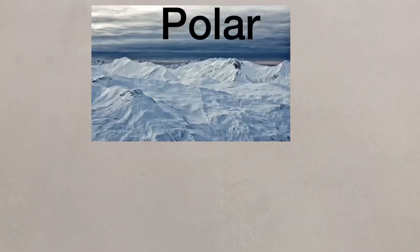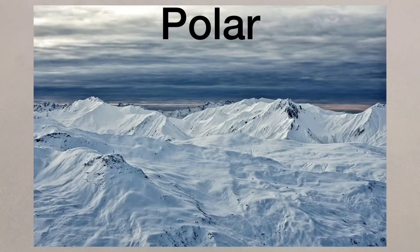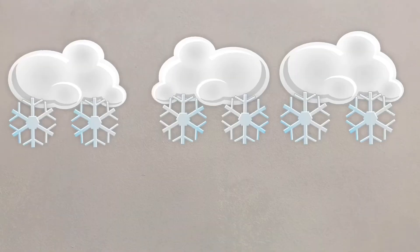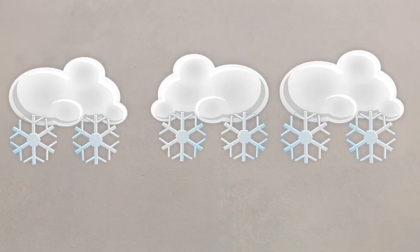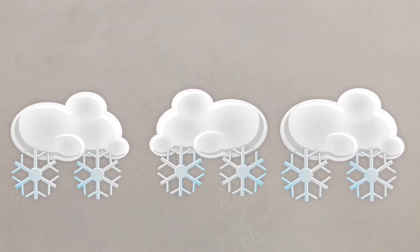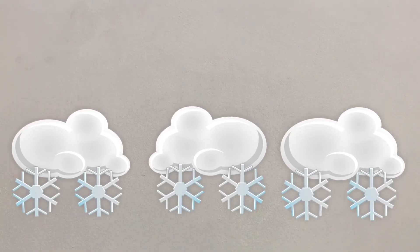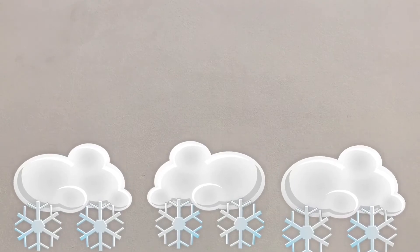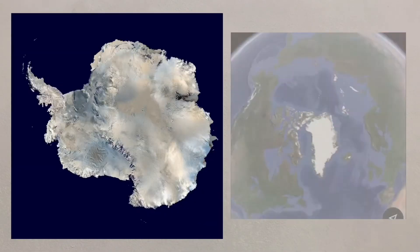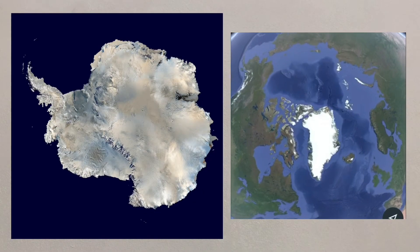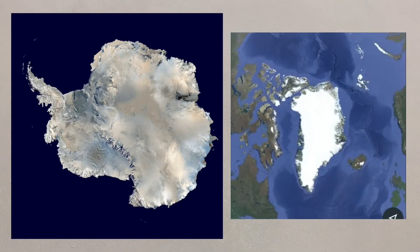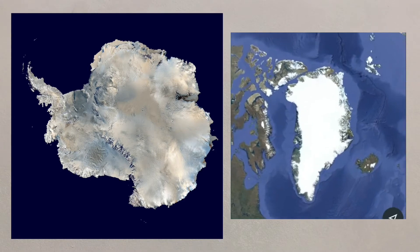There are a number of biomes we need to understand in terms of their location and their characteristics. Polar biomes are in the Arctic and Antarctic. Cold air will sink at both the north and south poles giving very low temperatures and dry conditions. The main polar regions are Antarctica and Greenland where temperatures can fall below minus 50 degrees Celsius.